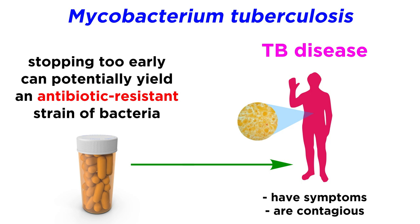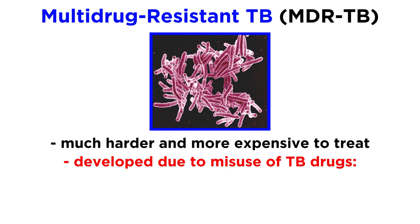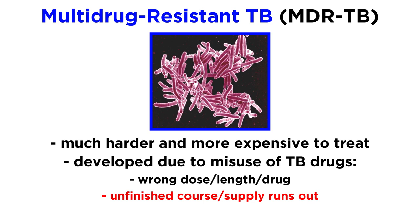Drug-resistant TB is much harder and way more expensive to treat. Multi-drug-resistant TB has developed largely due to misuse or mismanagement of TB drugs — as in when the wrong treatment is prescribed, meaning wrong dose, wrong length, or wrong drug altogether; when patients don't take their full course of drugs; or when the drug supply runs out or the drugs are of poor quality.